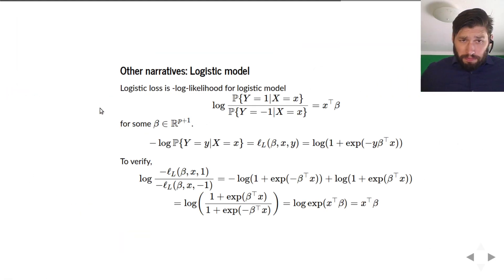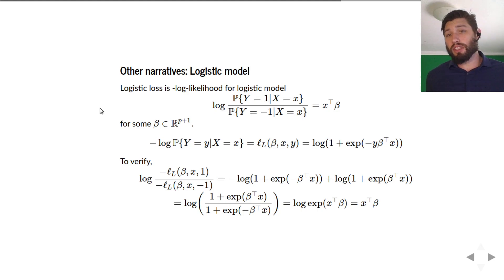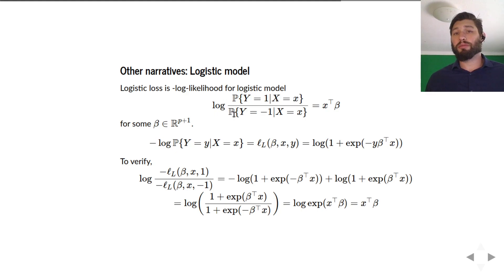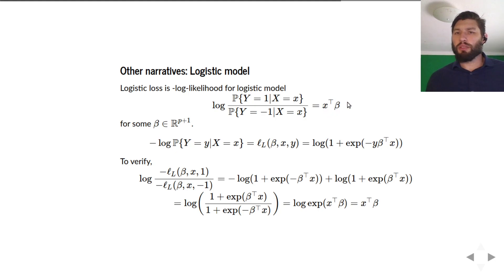A classical narrative for logistic regression is through a logistic model. The basic assumption is that if you calculate the log odds of Y being 1 given X, that is linear in the input. Specifically, the logistic model assumes that if you take the log of P(Y=1|X) divided by P(Y=-1|X) — the log odds — that equals X-transpose beta, the linear term. Typically an intercept is absorbed into this linear function, so beta is in R^(p+1).